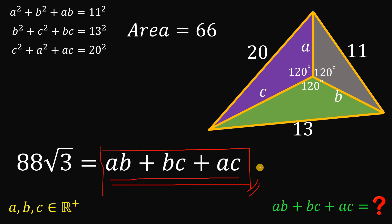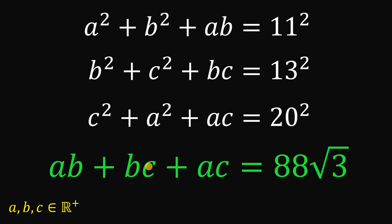So the numerical value of AB plus BC plus AC is 88 square root of 3. Now, your question might be: is this correct? Why do we use geometry? Because A, B, and C are positive real numbers, and they serve as side lengths — therefore they must be positive real numbers. So our final answer is AB plus BC plus AC equals 88 times the square root of 3. If you solve this using algebra, please comment your solution in the comment section below — I'd love to read it.